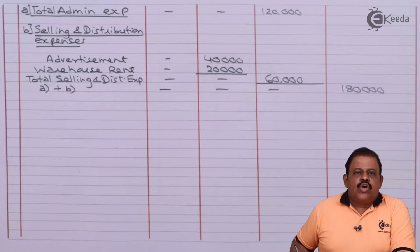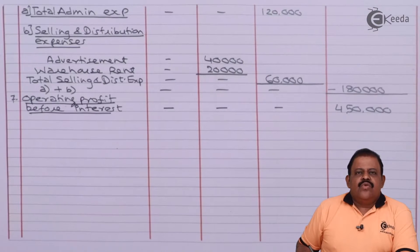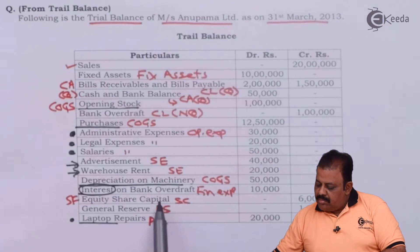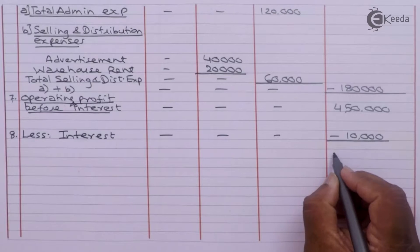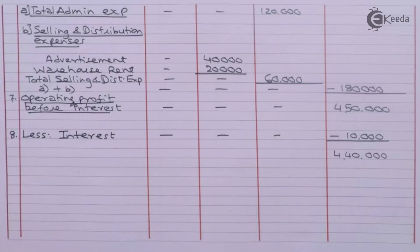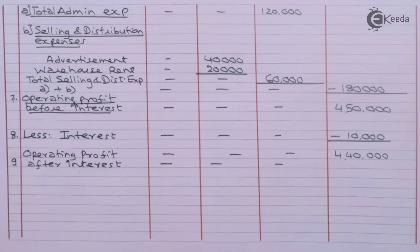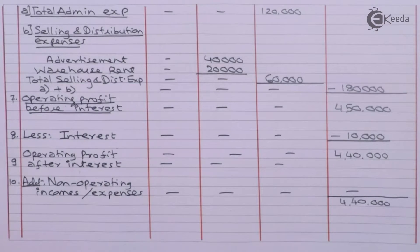Total operating expenses are deducted from gross profit. Operating profit before interest is 4 lakhs 50,000. From this we deduct interest on bank overdraft of 10,000, giving 4 lakhs 40,000 — that is operating profit after interest. In this question there are no non-operating incomes or non-operating losses, so 4 lakhs 40,000 is net profit before tax.